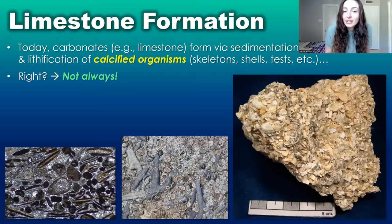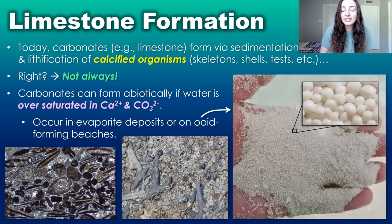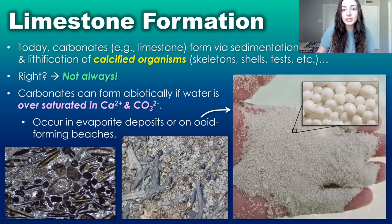In other words, abiotically. Carbonates form abiotically or precipitate from water if the water is oversaturated in the ions that make up calcium carbonate — calcium and carbonate ions. This abiotic formation of calcium carbonate can occur in evaporite deposits where water is in a dry environment and evaporates, leaving behind supersaturated water that eventually precipitates out all of its carbonates and other salts.